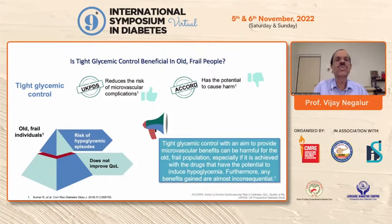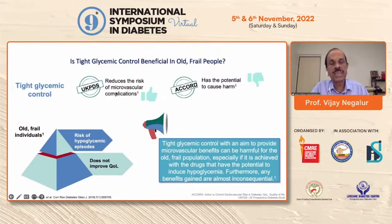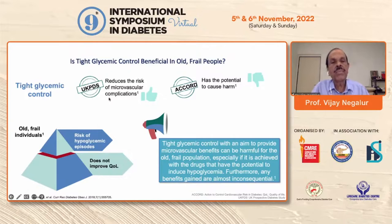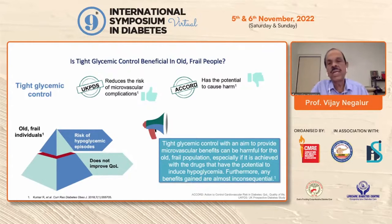Is tight glycemic control beneficial in the elderly population? The UKPDS shows it does reduce microvascular complications, and the subsequent part of the study showed some benefits for macrovascular complications as well. However, the ACCORD study has the potential to cause harm. Therefore, in elderly frail populations who tend to have falls and risk of hypoglycemia, very tight control of diabetes is harmful and does not improve quality of life.